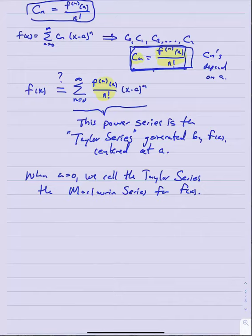Let's run through a couple of quick examples using this formula to construct the power series for a function. Let's start with f of x equals e to the x. We constructed a power series for this function in the previous section and found that it was the sum from n equals zero to infinity of x to the n over n factorial. Let's do it constructively this time using the formula.